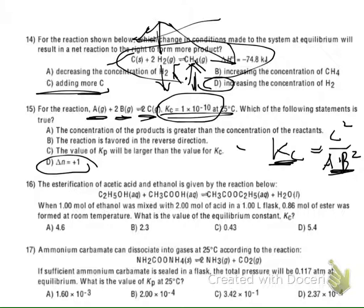Question number 16: the esterification of acetic acid and ethanol. This is your acetic acid, this is your ethanol. One mole of ethanol is mixed with two moles of acetic acid in a one-liter flask. They give us moles and volume. We're told 0.86 moles of ester was formed at room temperature. What is the value of the equilibrium constant Kc? We need to set up an ICE table.